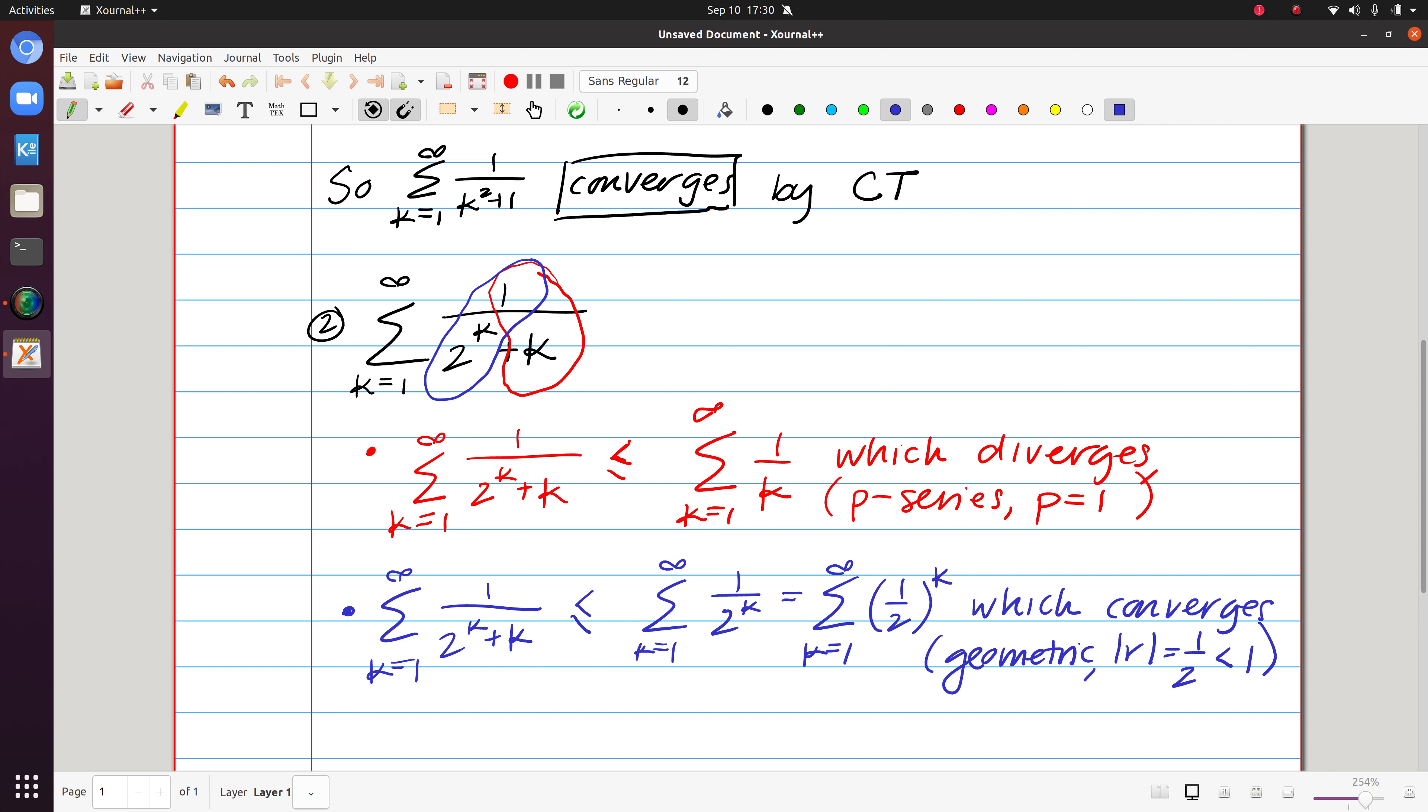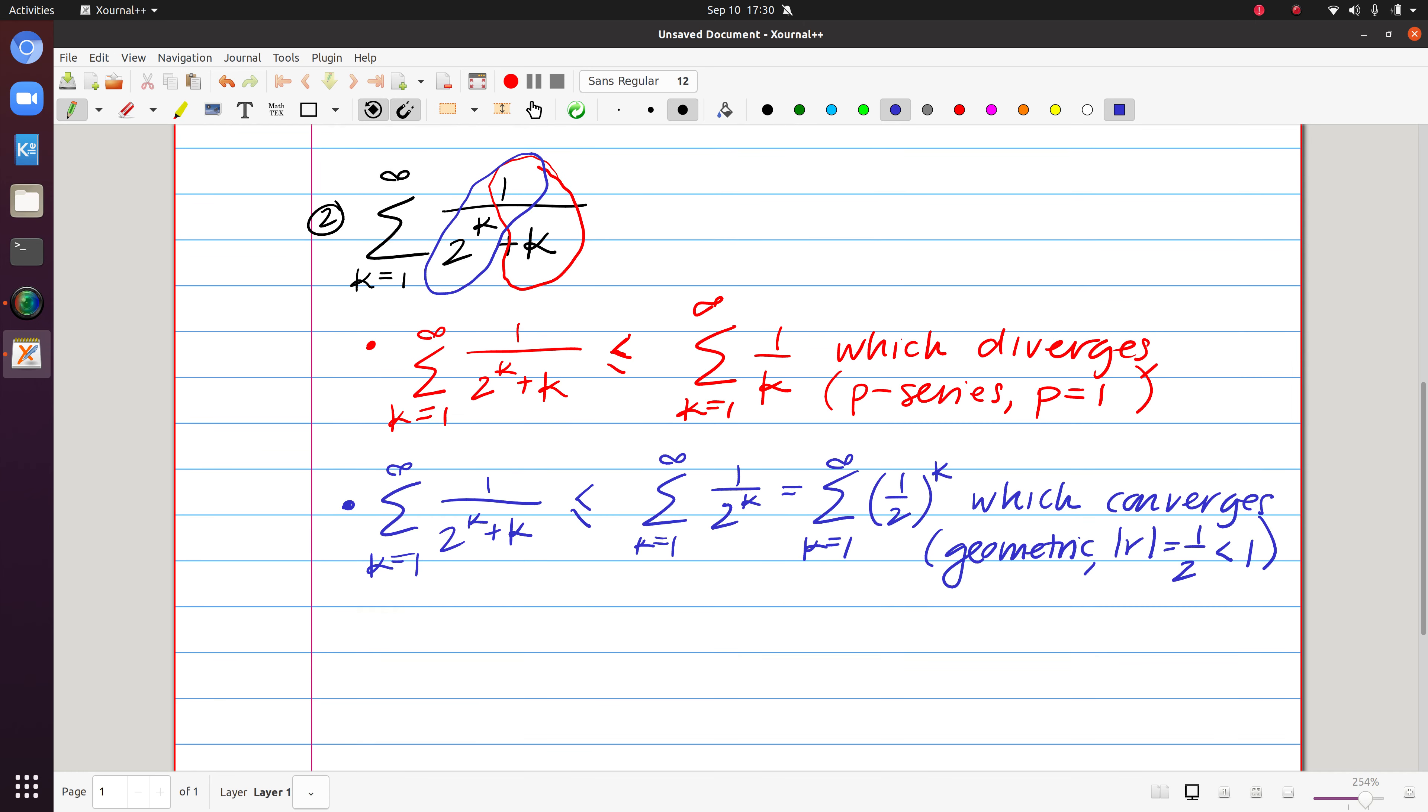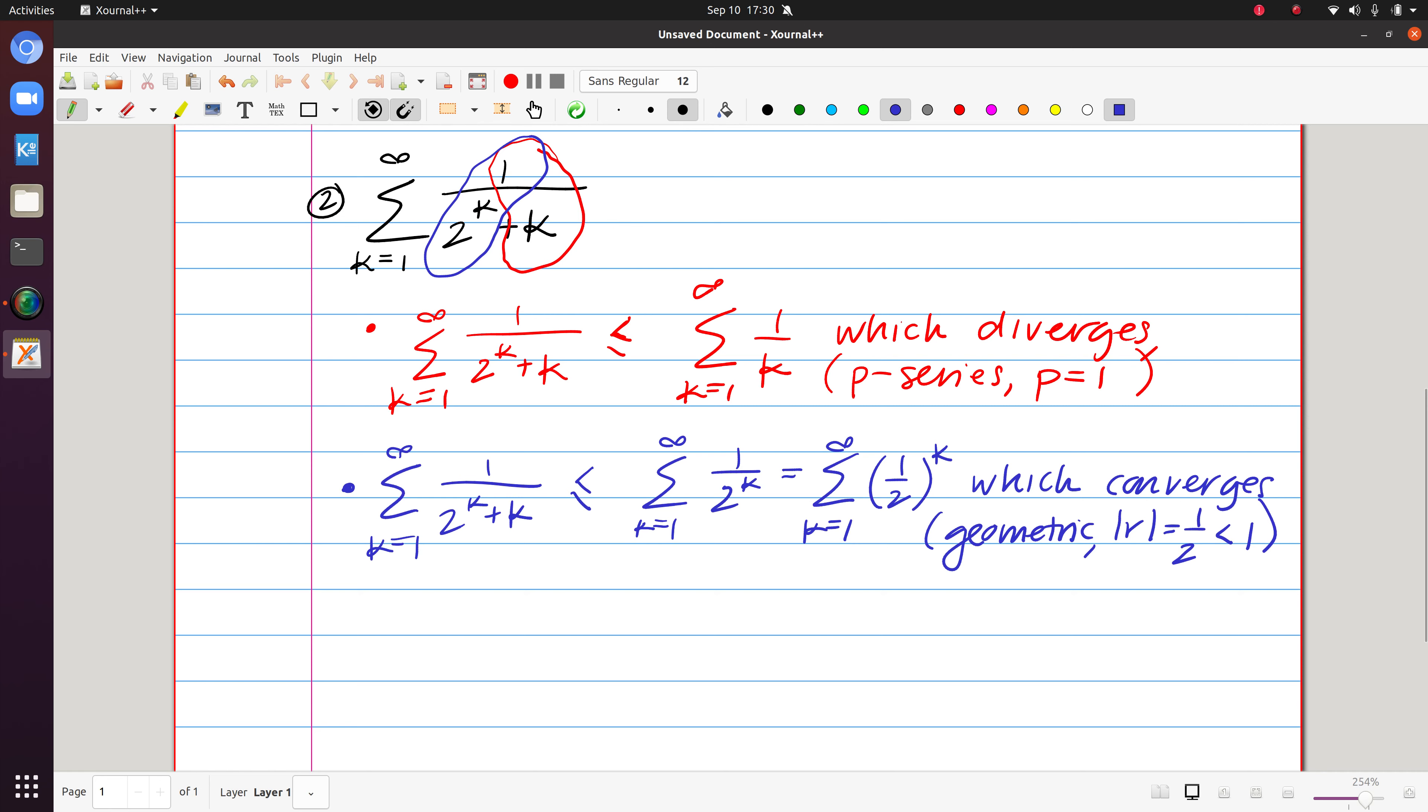So I have two comparisons that I can make here. But I'll note that only the blue comparison is useful, if you think back to the comparison test. In red, we've bounded our series above by one that's known to diverge, which really tells us nothing. But in blue, we've bounded it above by a series that converges.